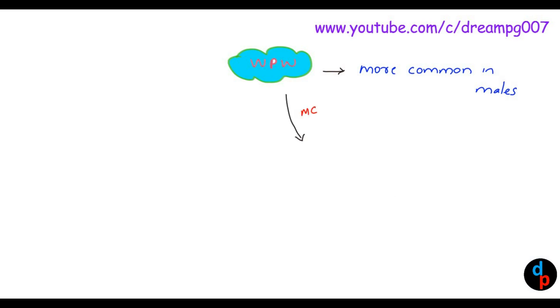The most common arrhythmia associated with Wolff-Parkinson-White syndrome is AVRT, atrioventricular reentrant tachycardia. The second most common arrhythmia is atrial fibrillation.